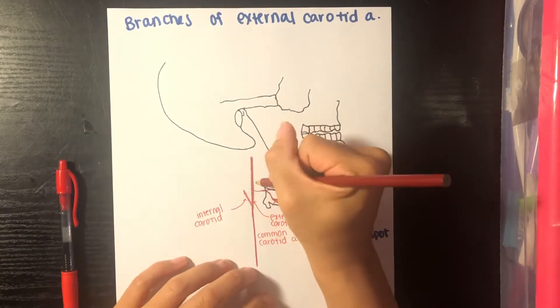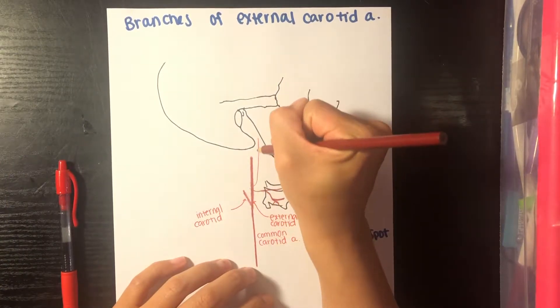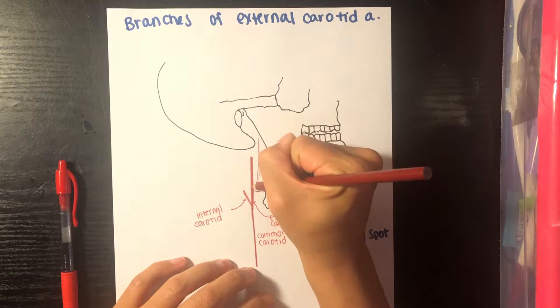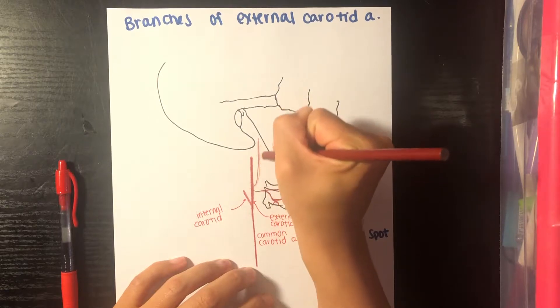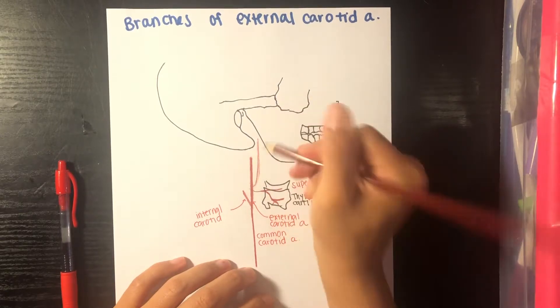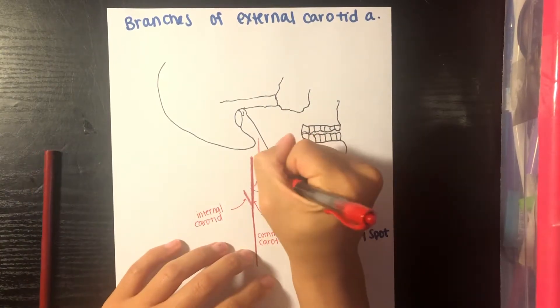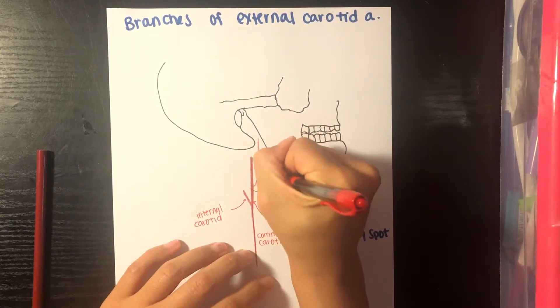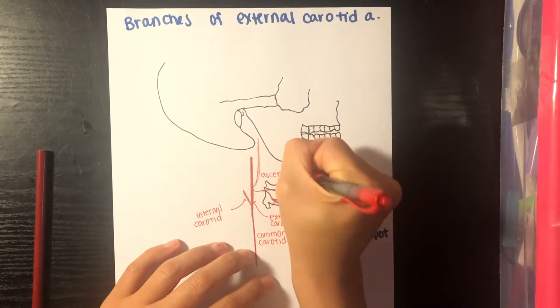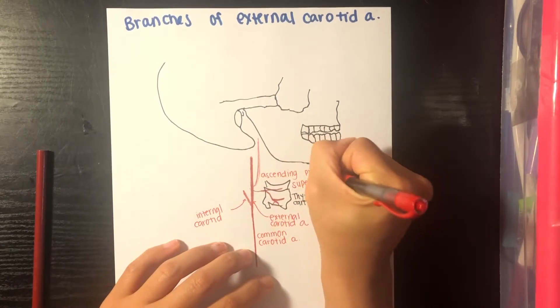Next we have an artery that goes slightly medial, so you won't really see it from this view, but this is your ascending pharyngeal artery.